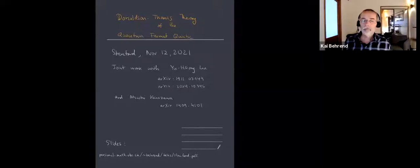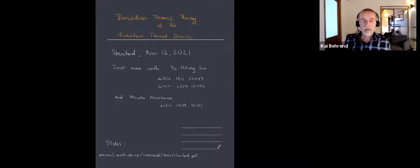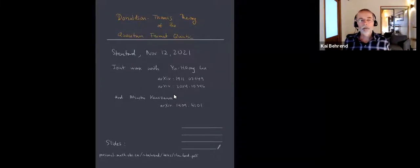We're very glad to have Kai Barron from UBC who's going to tell us about Donaldson-Thomas theory of the quantum Fermat quintic. Thanks very much for the invitation and giving me the opportunity to explain this work. It's joint work with two of my students, Yusheng Liu and Atsushi Kanazawa, and it's all written up in these archive papers.